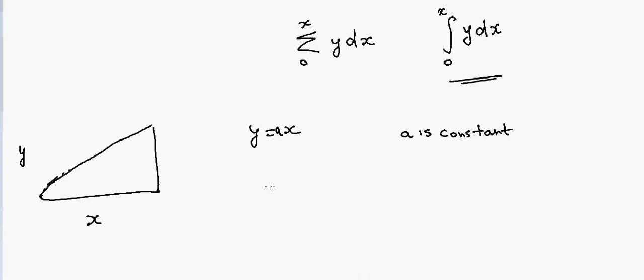So now in this case, how will I calculate? I'll do this: I'll say y dx, and suppose x is going from 0 to x, then I can call it 0 to x, and this is the area. Now if I do that, then I can write that as a x dx, 0 to x, and then the answer will be equal to a x squared divided by 2.